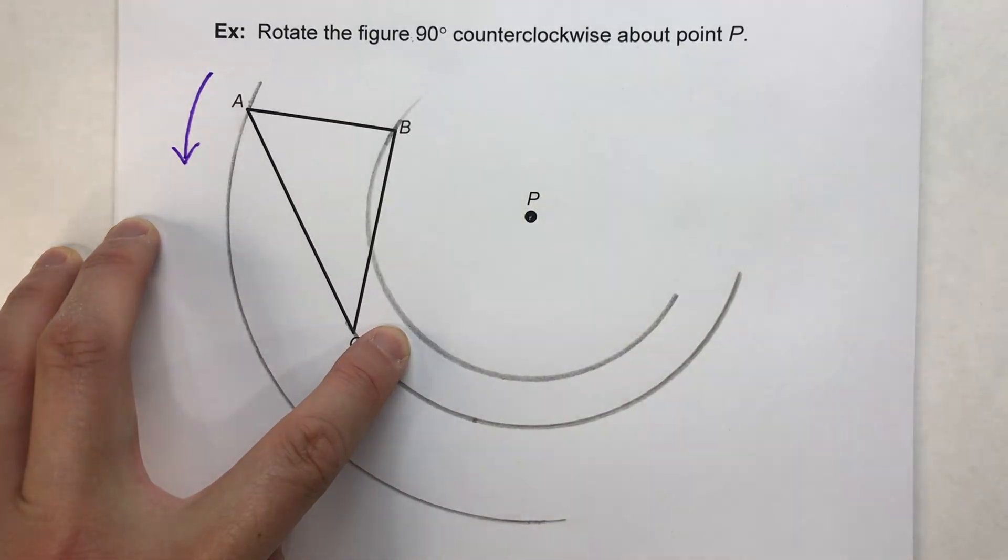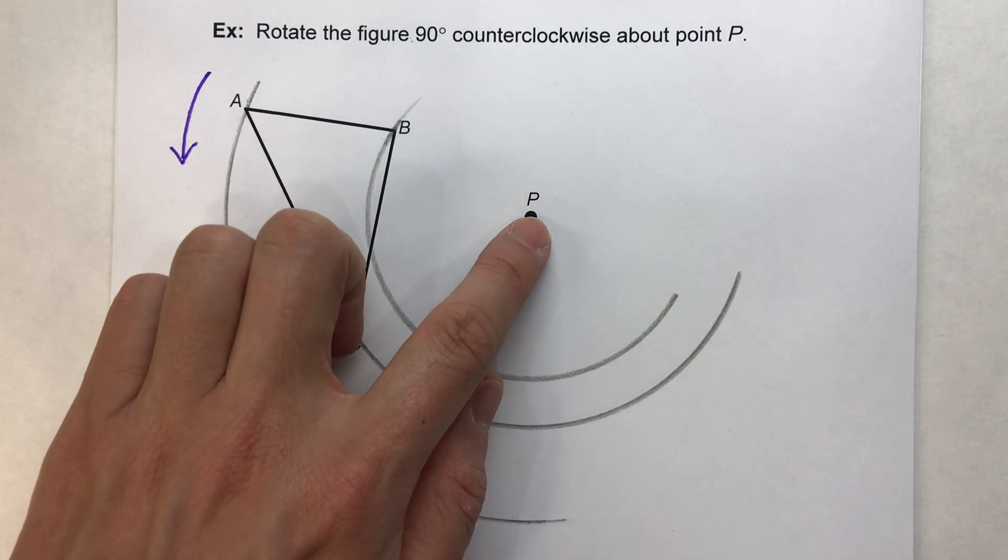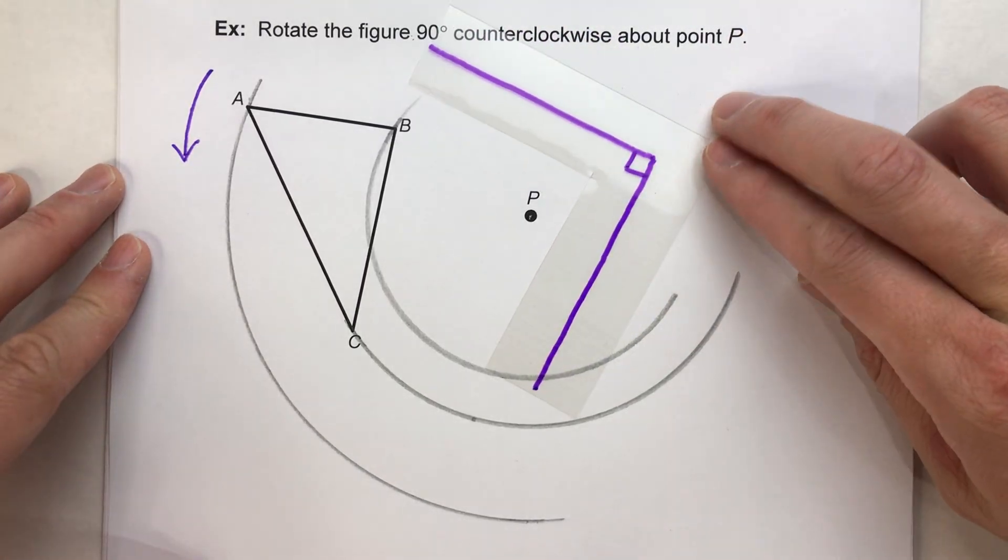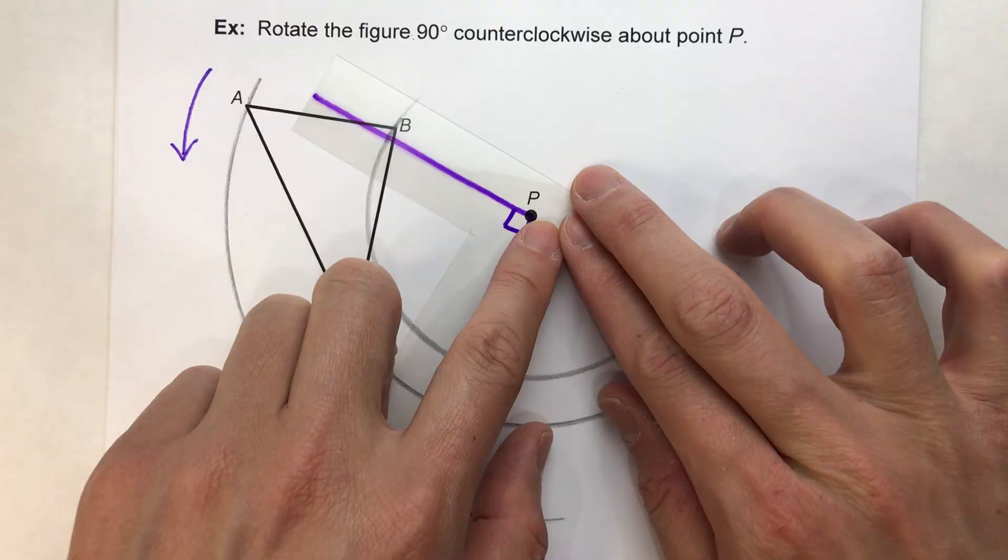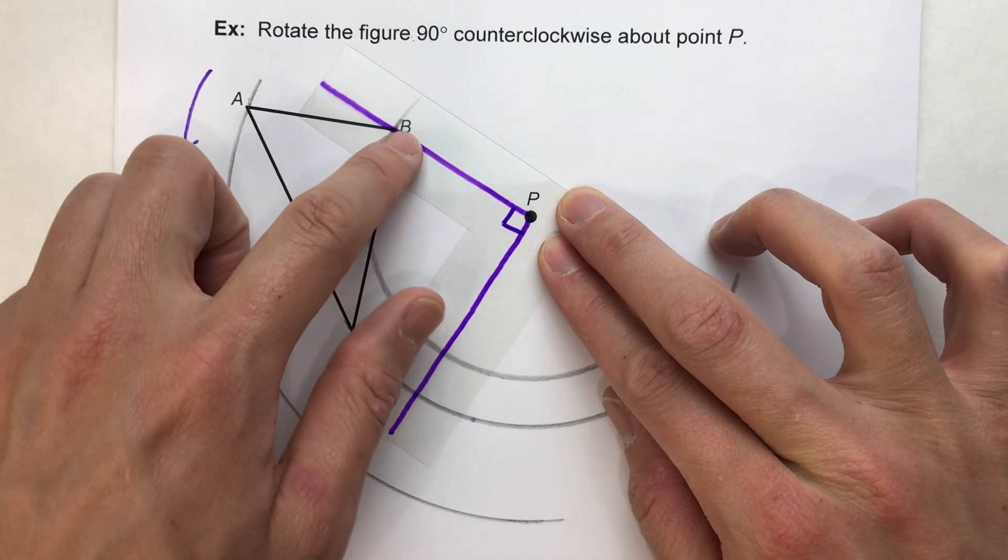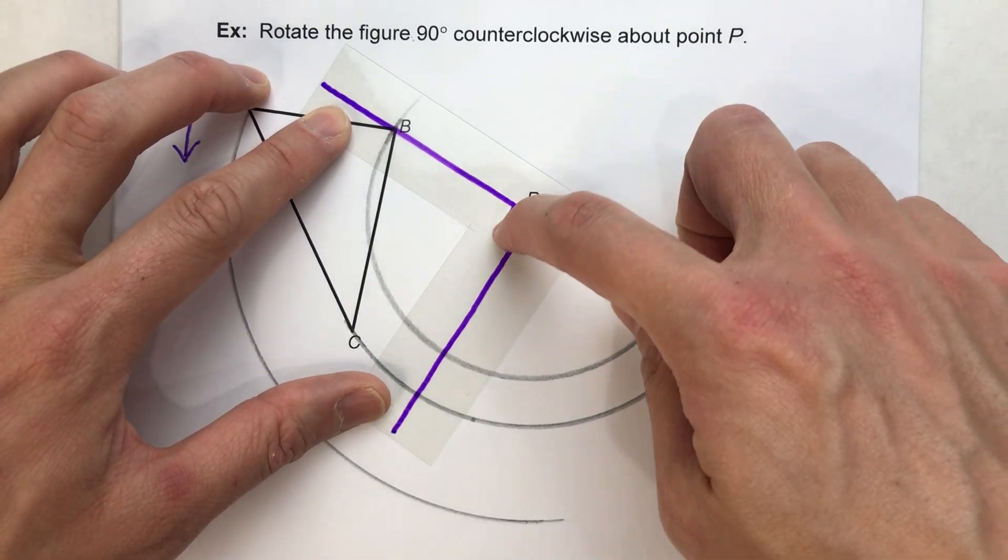And that's where the 90 degrees comes in. So when is 90 degrees around point B? Well, it might help to illustrate this with a little right angle here. So here's P to B right here. So 90 degrees will be, here's my right angle.